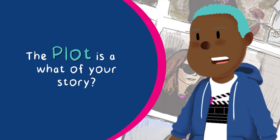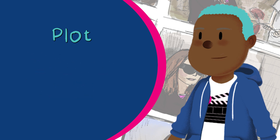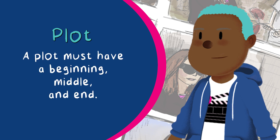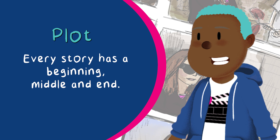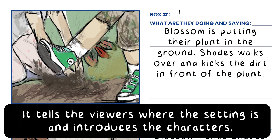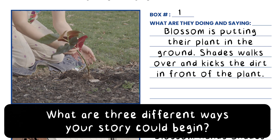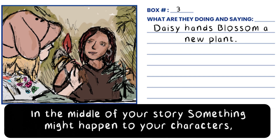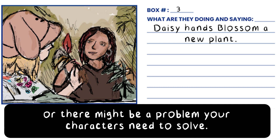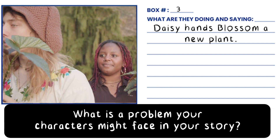The plot is the what of your story — the events or actions that happen to your characters. A plot must have a beginning, middle, and end. The beginning is the first part of your story; it tells the viewers where the setting is and introduces the characters. What are three different ways your story could begin? In the middle of your story, something might happen to your characters or there might be a problem your characters need to solve. What is the problem your characters might face in your story?